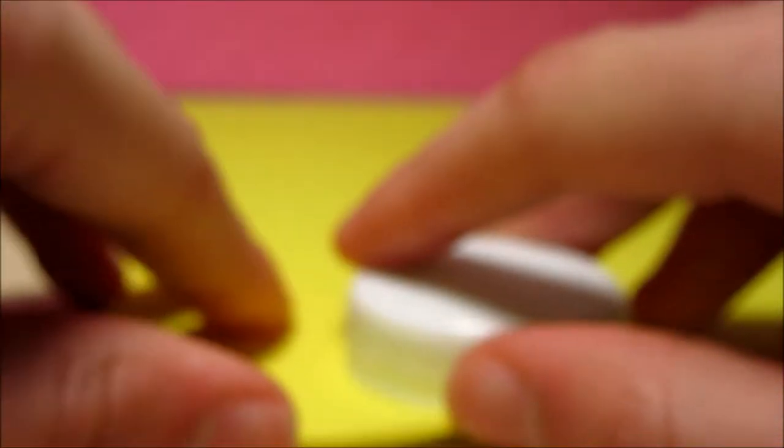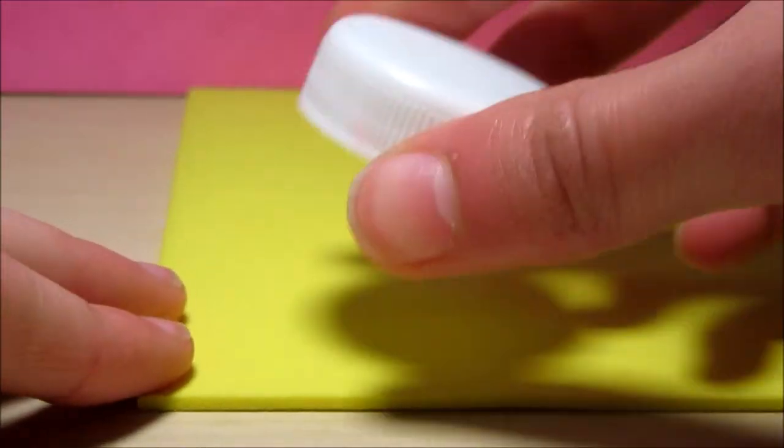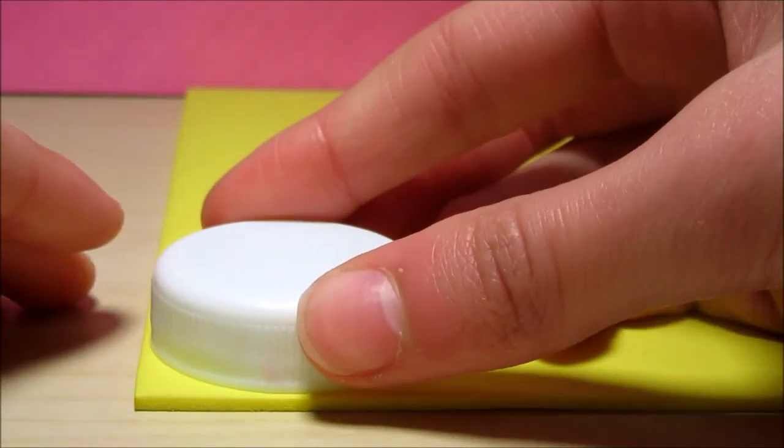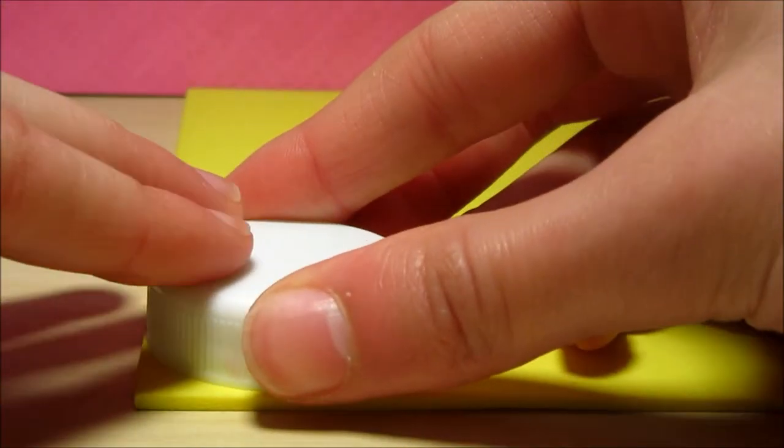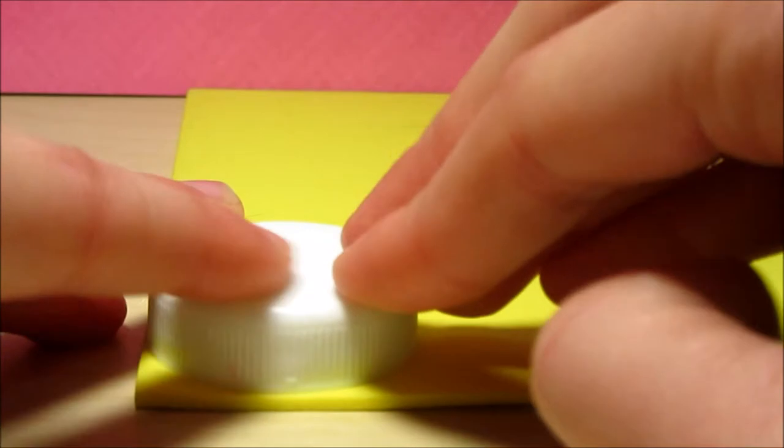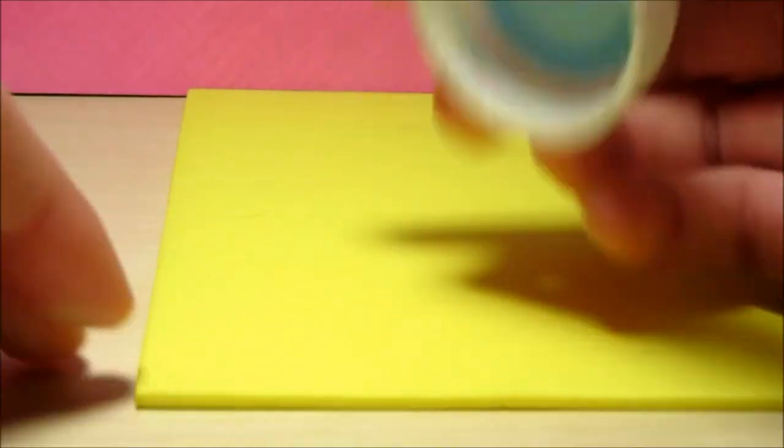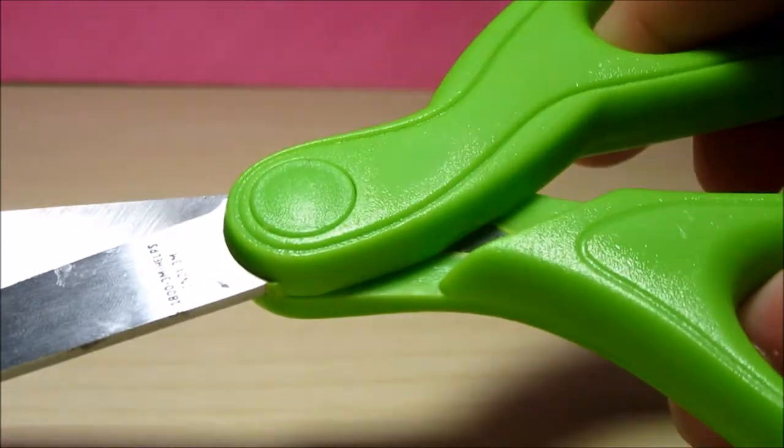So the first thing you want to do is take your craft foam, and once you have it you're going to take your circular object and press it down into the foam until it leaves an indent in the foam. Then you're going to want to cut that out.